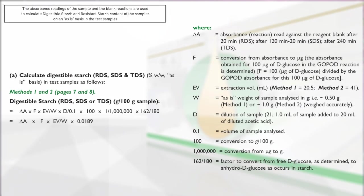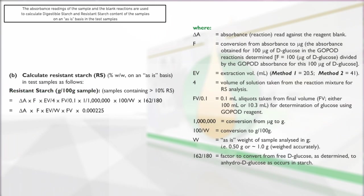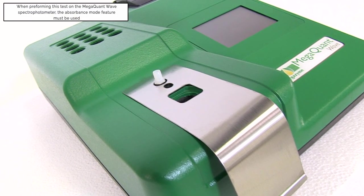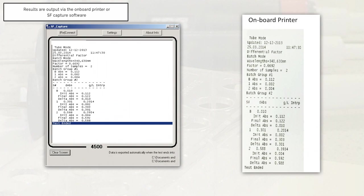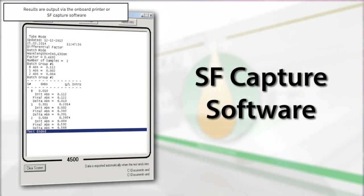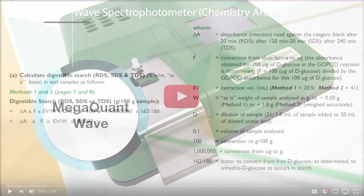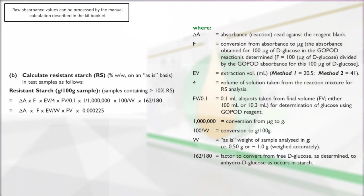The absorbance readings of the sample and blank reactions are used to calculate digestible starch and resistant starch content of the samples on an as-is basis. When performing this test on the MegaQuant Wave Spectrophotometer, the absorbance mode feature must be used. Results will be printed via the onboard printer, or data can be exported to a computer using the SFCapture software. In absorbance mode, the results output are raw absorbance values for both blank and samples; calculations can be performed as described in the calculations section of the kit booklet.